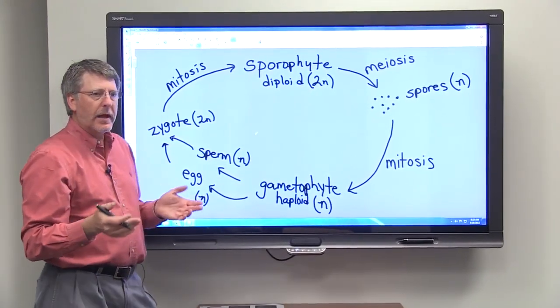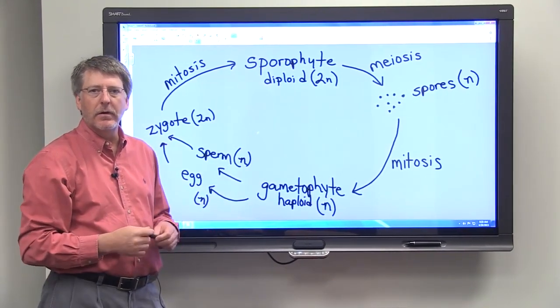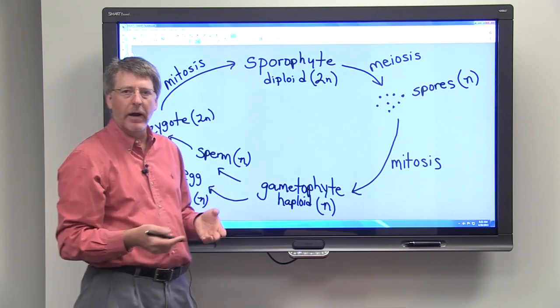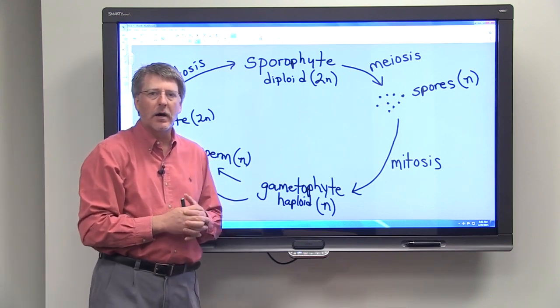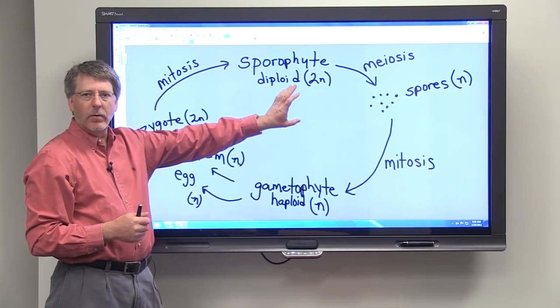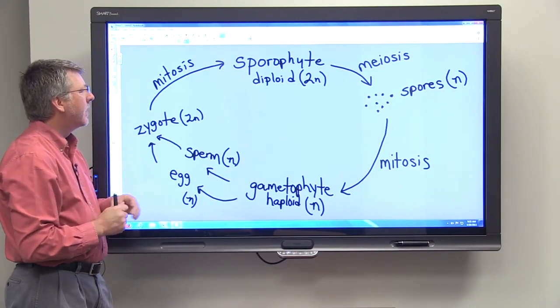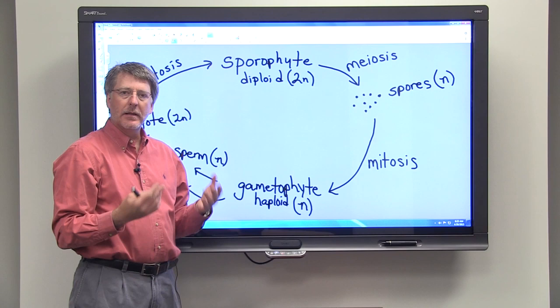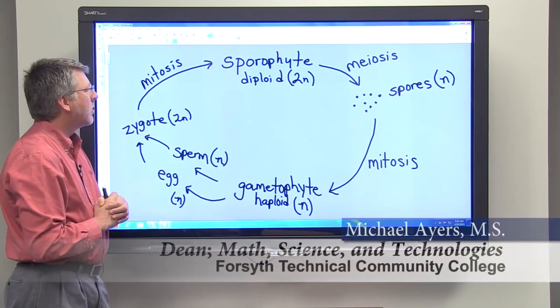Most plants have a dominant sporophyte generation. So if you look out your window and you see a bunch of trees and grass, then you're looking at the sporophyte generation of plants. So think about an oak tree, for example. That oak tree represents the sporophyte generation. And that sporophyte generation is diploid, meaning that it has two copies of each kind of chromosome.